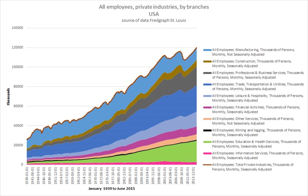Wage labor is the socioeconomic relationship between a worker and an employer, where the worker sells their labor under a formal or informal employment contract. These transactions usually occur in a labor market where wages are market determined. In exchange for the wages paid, the work product generally becomes the undifferentiated property of the employer, except for special cases such as the vesting of intellectual property patents in the United States where patent rights are usually vested in the original personal inventor. In modern mixed economies such as that of the OECD countries, wage labor is currently the dominant form of work arrangement.